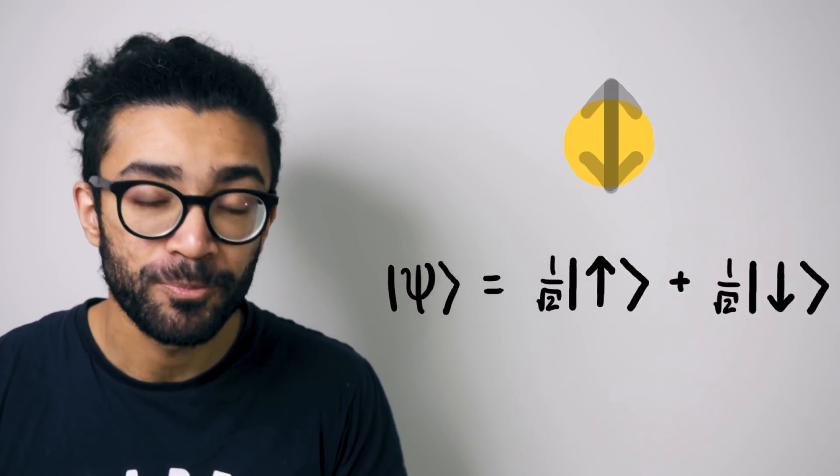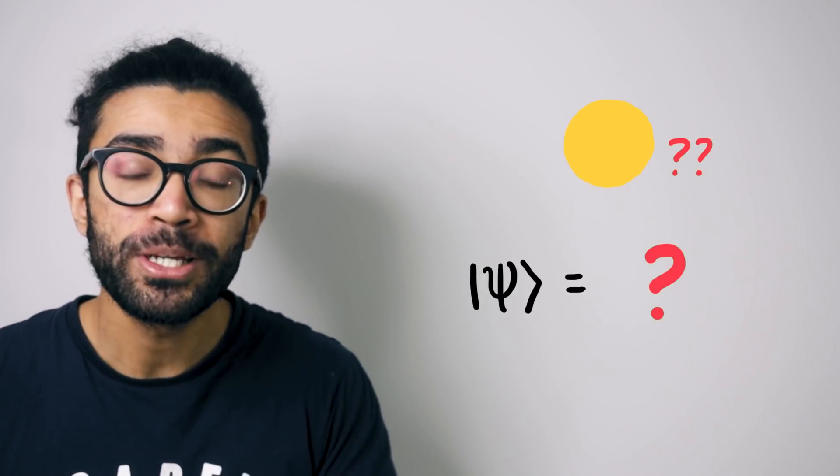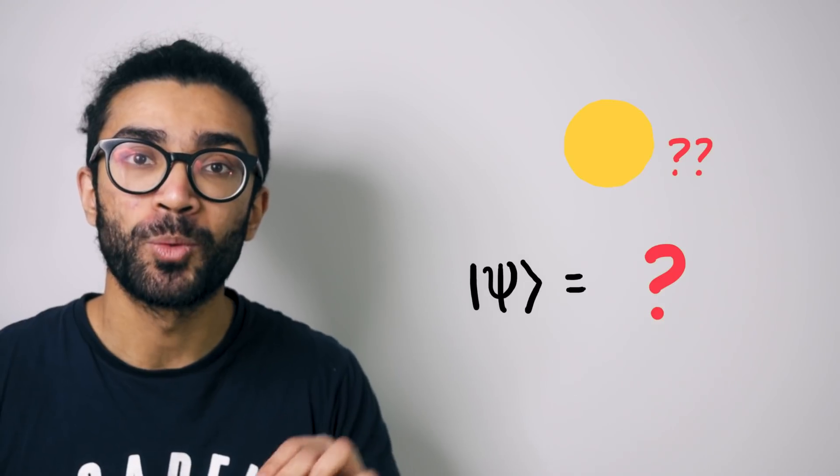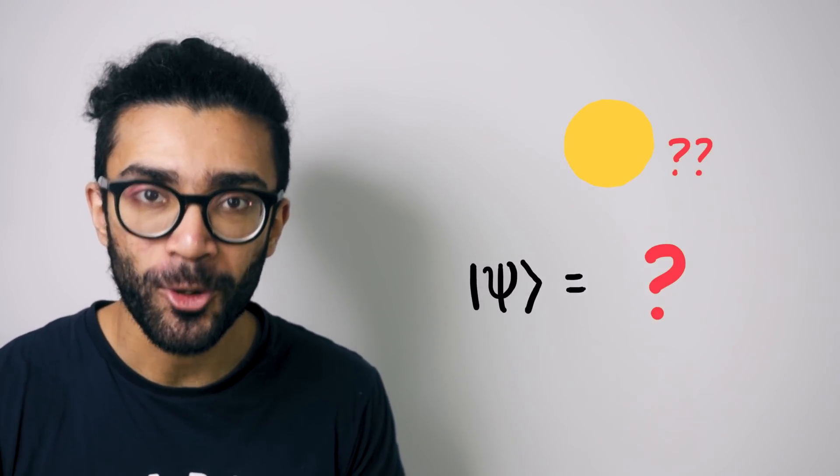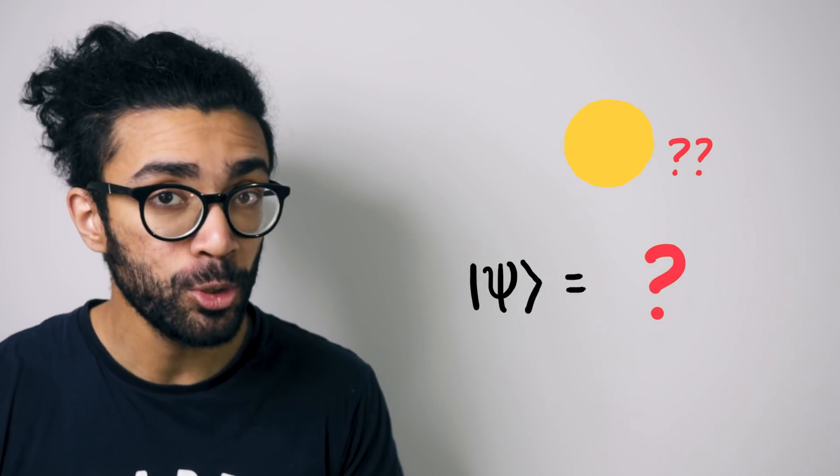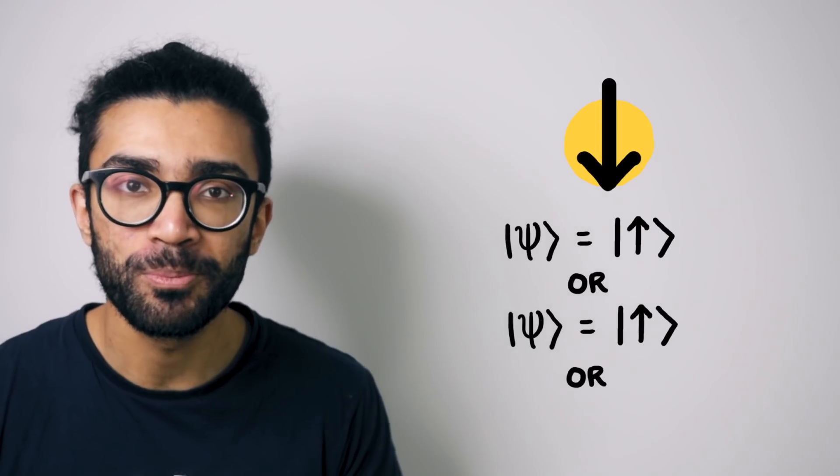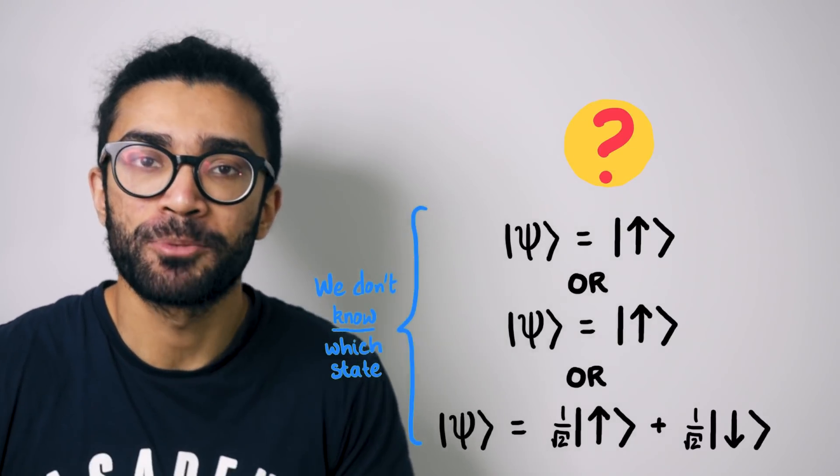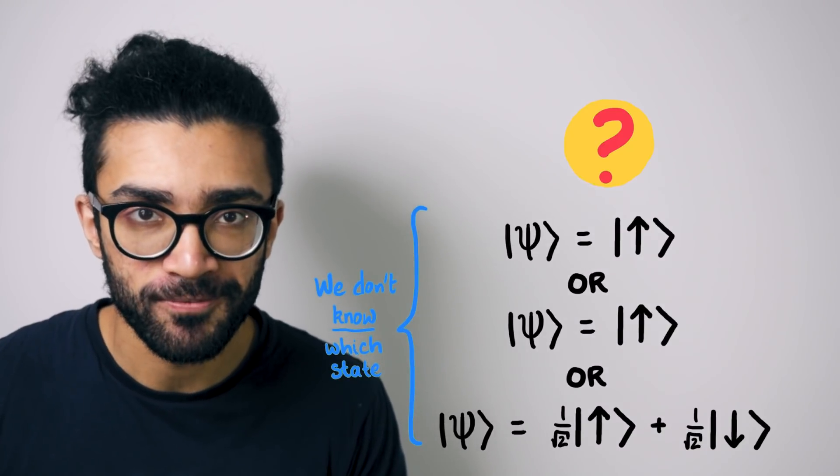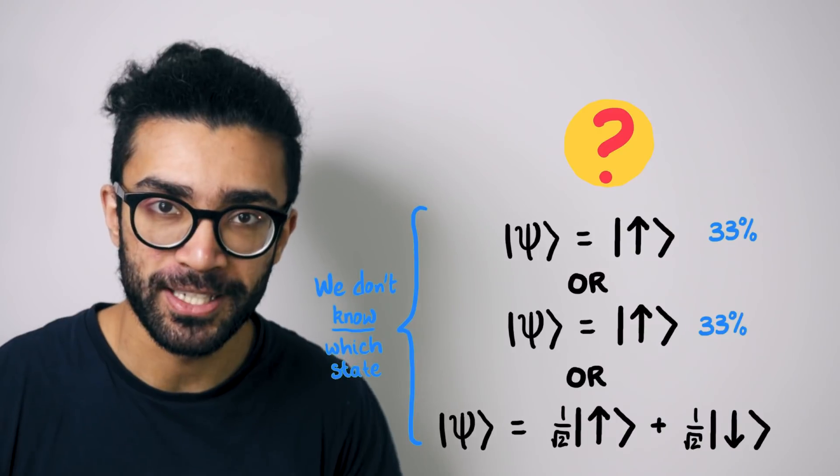But to understand a mixed state, let's imagine we don't have enough information about our system. And we just know that our electron could be in one of many different pure states. For example, let's say that the only thing we know about our electron is that it could be in this state, or it could be in this state, or it could be in this state. We don't know exactly which one it's in because we perhaps don't have access to that information. But we might know the likelihood with which we'll find our electron in one of these particular states.